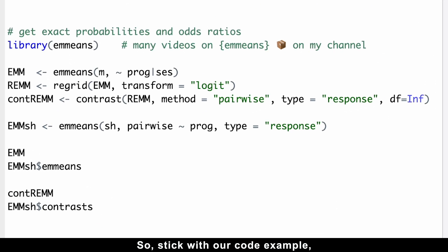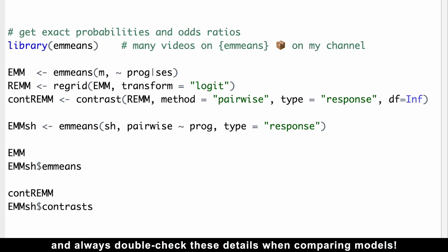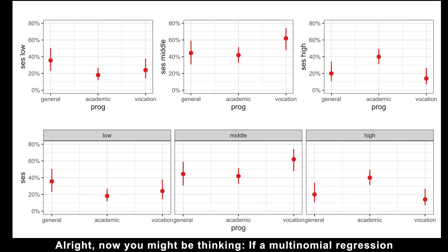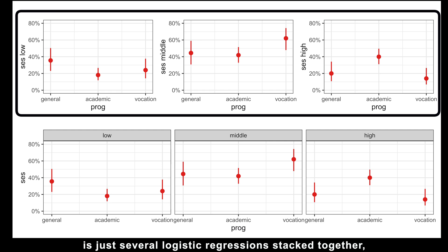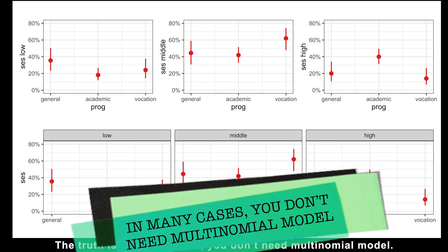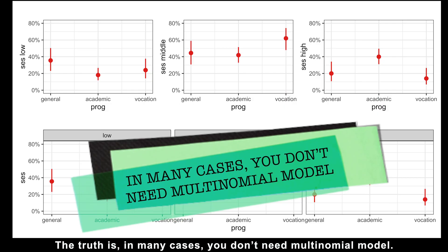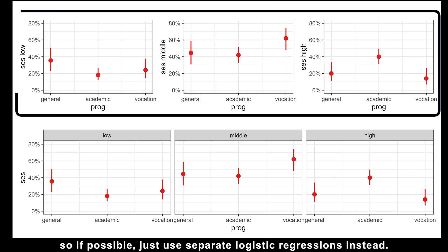So stick with our code example and always double-check these details when comparing models. You might be thinking: if a multinomial regression is just several logistic regressions stuck together, why do we need it at all? The truth is, in many cases you don't need a multinomial model. Logistic regressions are simpler and easier to interpret, so if possible, just use separate logistic regressions instead.